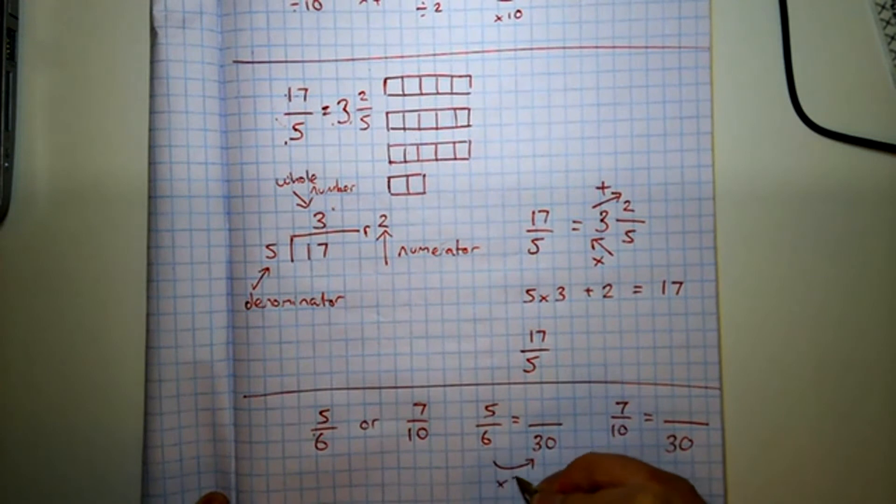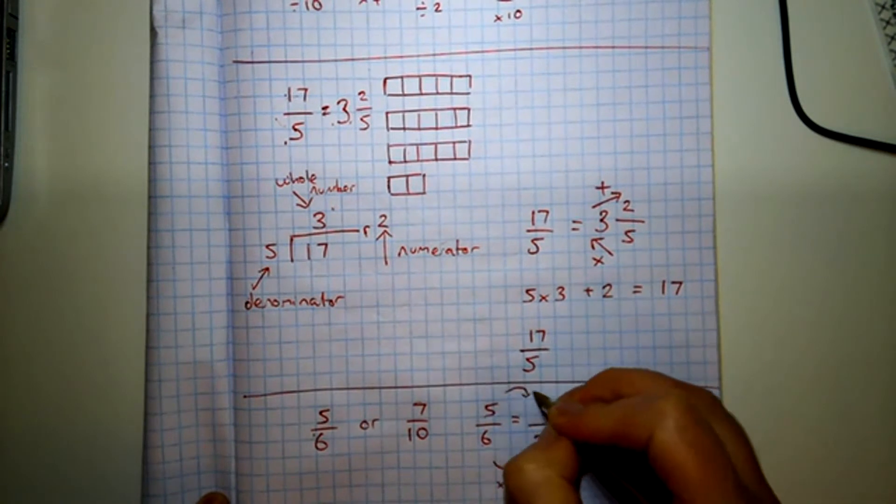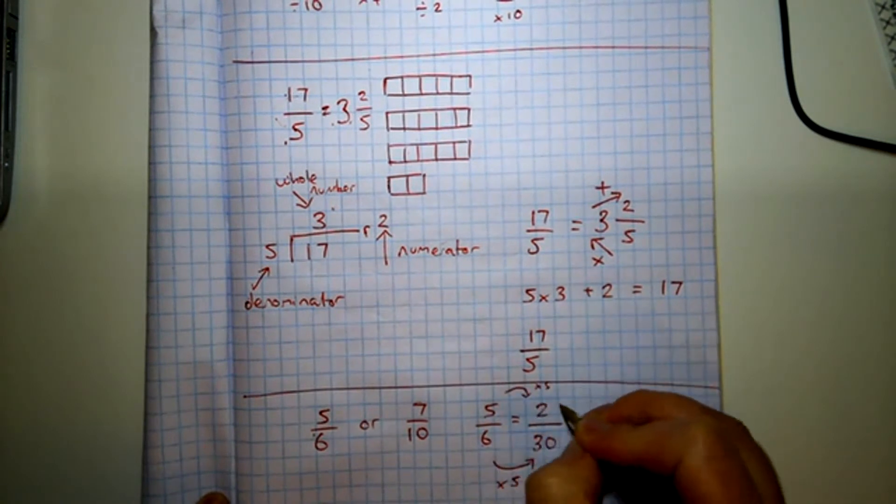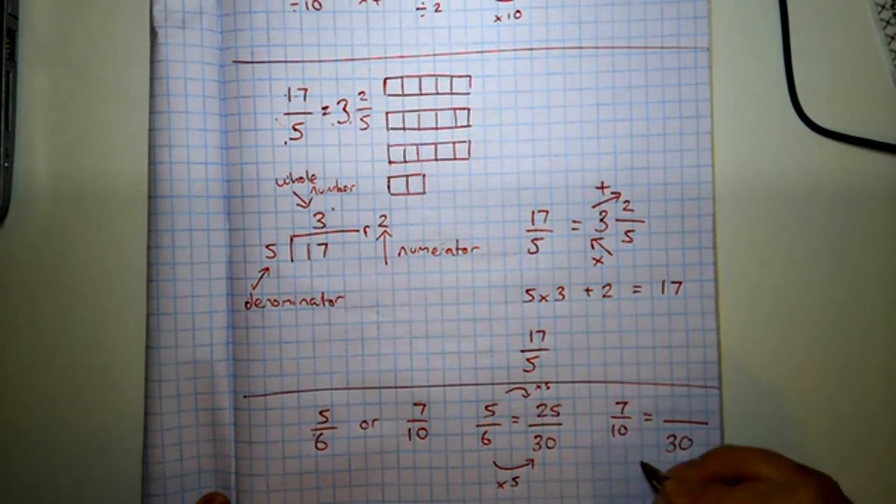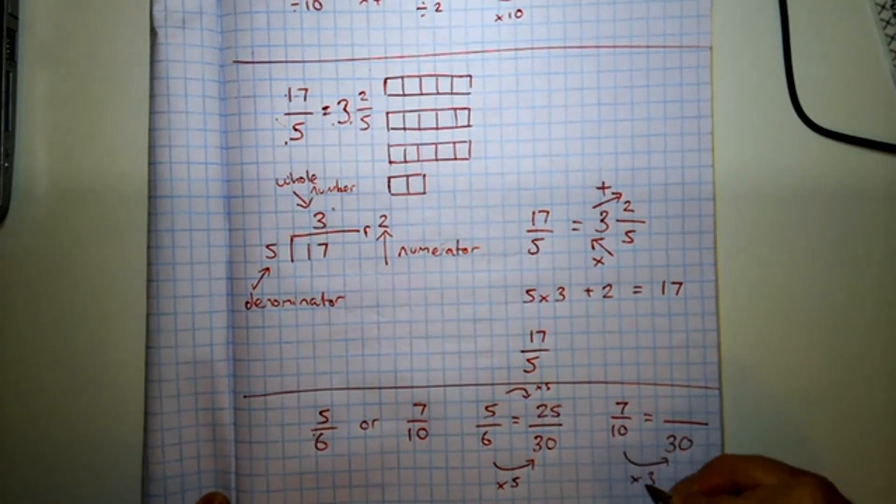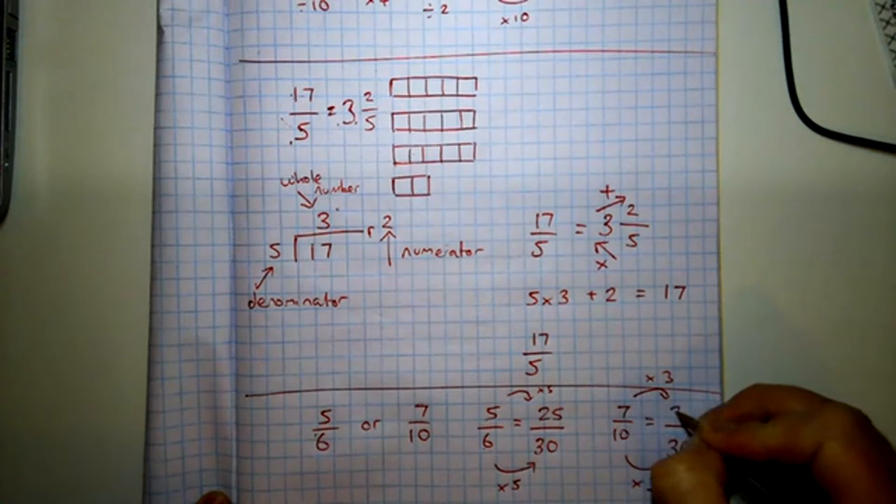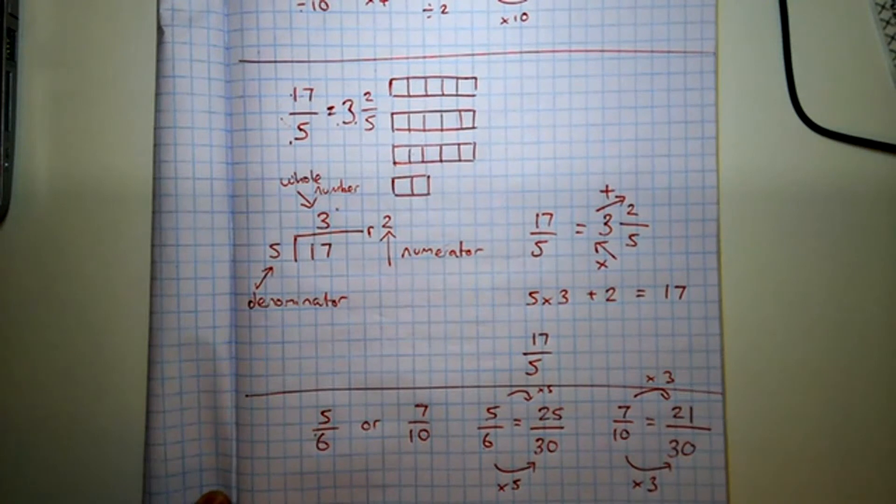In this instance, I'd have to times by five to get 25 on the top. In this instance, I'd have to times by three to get 21 on the top. So that's how I know seven tenths is smaller because it's only 21 out of 30. And five sixths is bigger because it's 25 out of 30.